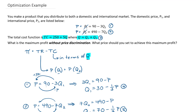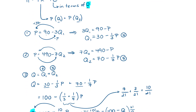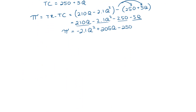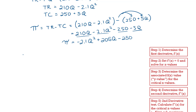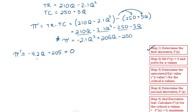Our main objective is to maximize profit — to find what price we need to set to maximize profit. So we start the optimization process. First step: take the first derivative, which is negative 4.2Q plus 205. Next, set this equal to zero to find the critical point. Moving 4.2Q to the other side: 205 equals 4.2Q. Dividing both sides by 4.2 gives Q equals 48.81.